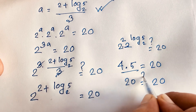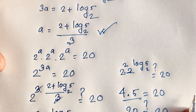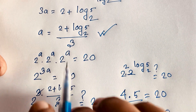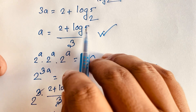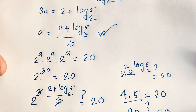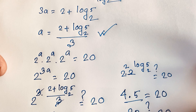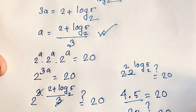So 20 is equal to 20. You can see A is equal to 2 plus log 5 base 2, all over 3 — this is our final answer. Thank you all. If you enjoyed this video, please subscribe to my channel for other interesting videos. Goodbye, take care.